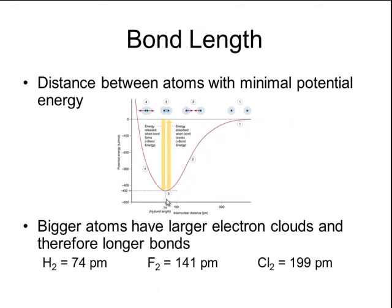There is a pattern between bond lengths and the size of atoms. Bigger atoms tend to have larger electron clouds and therefore their bonds will be longer. Hydrogen is one of the smallest atoms on the periodic table, and a hydrogen molecule has a bond length of 74 picometers. Fluorine is also a relatively small atom, but because it has more electrons in its electron cloud, it has a slightly longer bond length of 141 picometers.